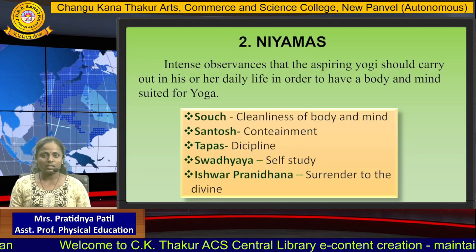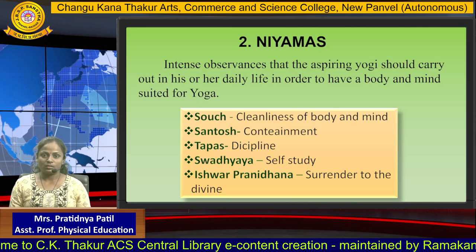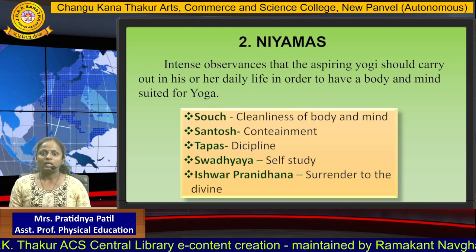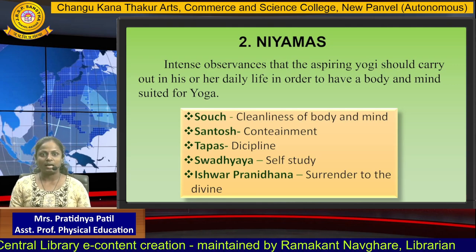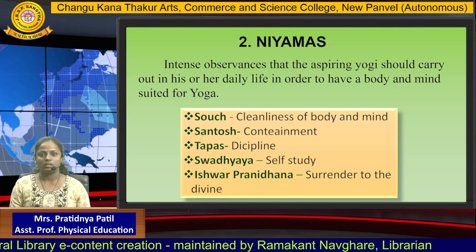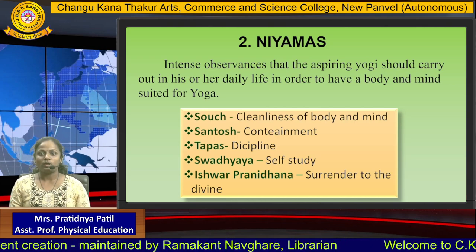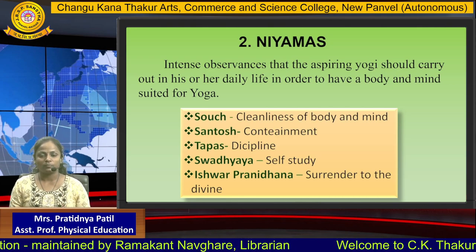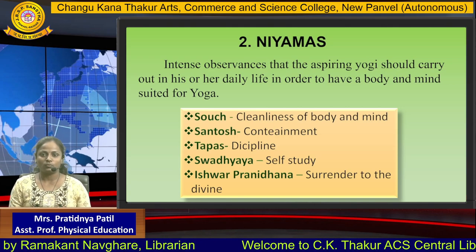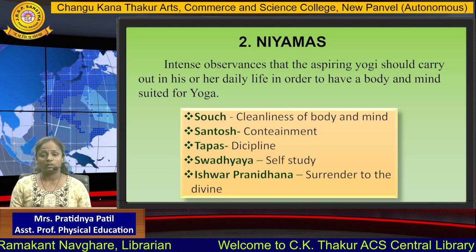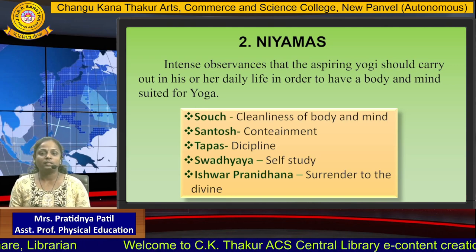The second type of Ashtanga Yoga is Niyam. There are also 5 Niyams — intense observances that the aspiring Yogi should carry out in his or her daily life in order to have a body and mind suited for Yoga. The first Niyam is Sauch, which means cleanliness of body as well as mind. The second Niyam is Santosh, which means contentment.